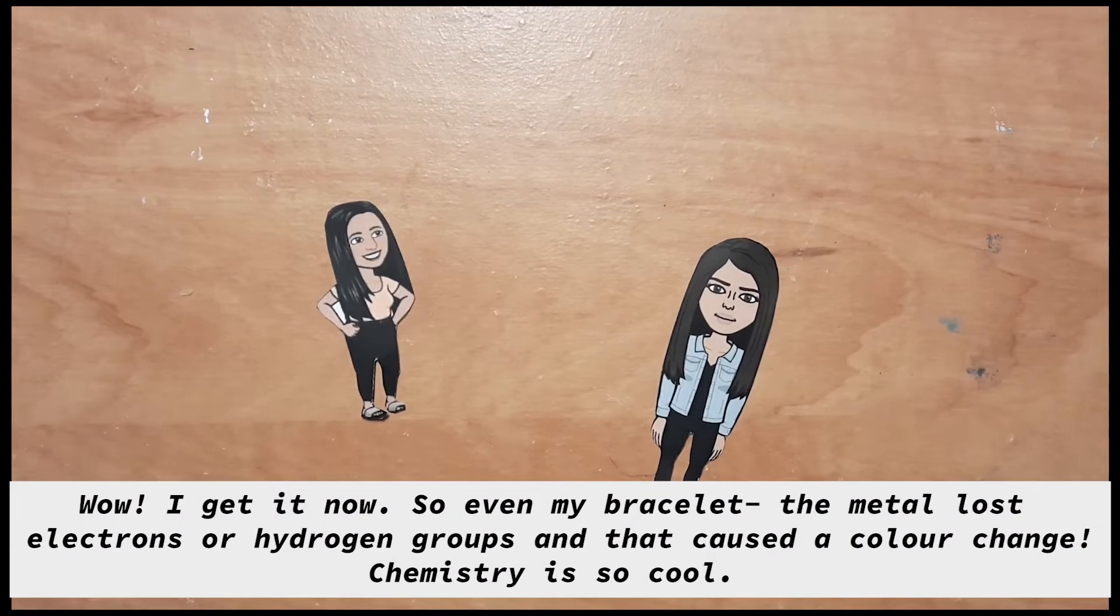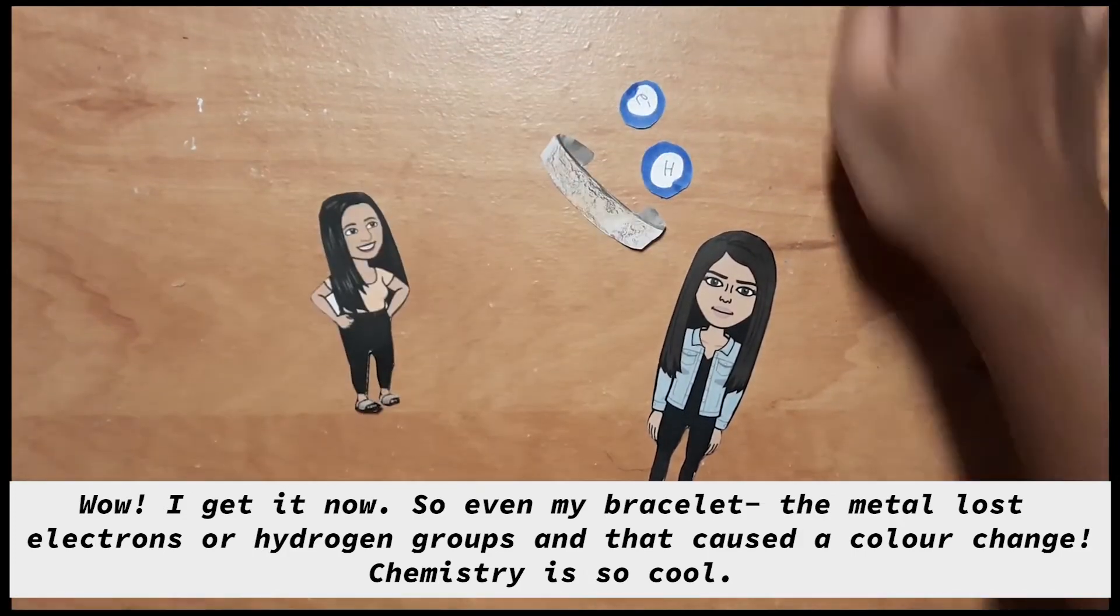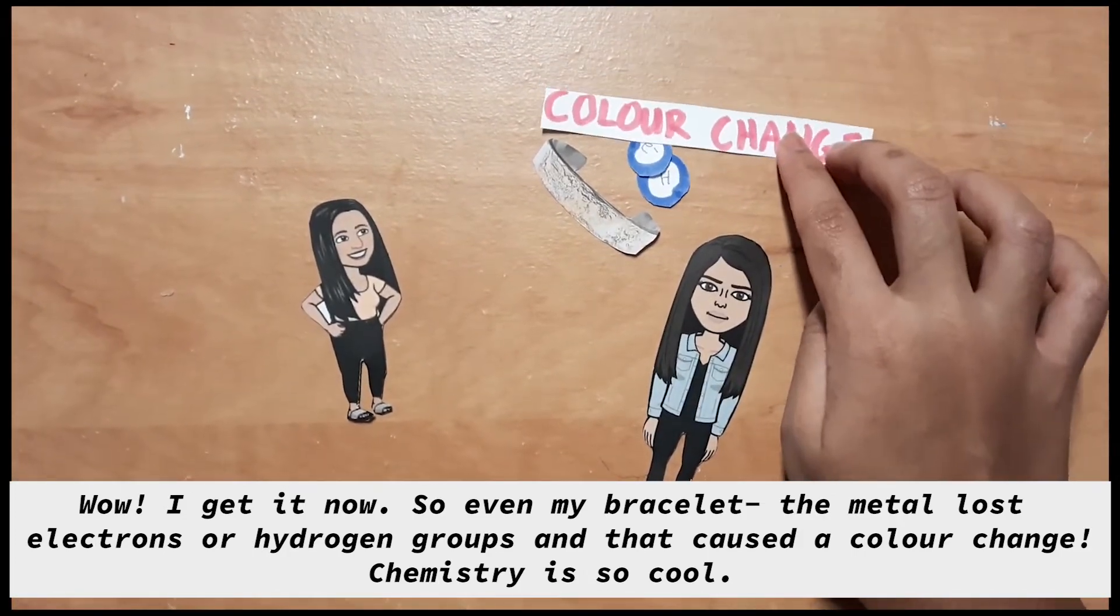Wow, I get it now. So, even my bracelet? The metal simply lost electrons, or hydrogen groups, to oxygen in the air. And that caused a color change. Chemistry is so cool.